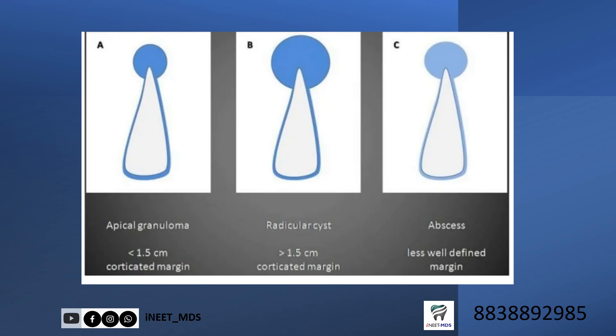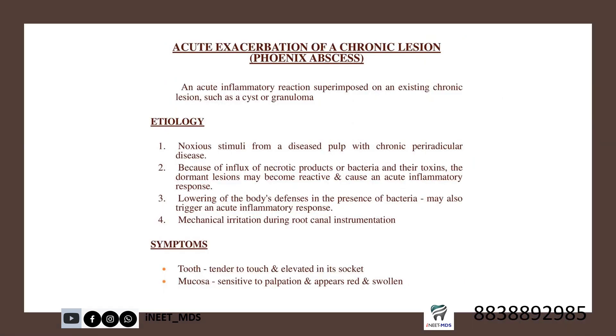Some textbooks say 1 centimeter is the margin — so if it is less than 1 centimeter it is either an abscess or granuloma, whereas if larger it may be a radicular cyst (also called dental cyst — both mean the same). Phoenix abscess is also known as acute exacerbation of a chronic periapical abscess — you should read about that.